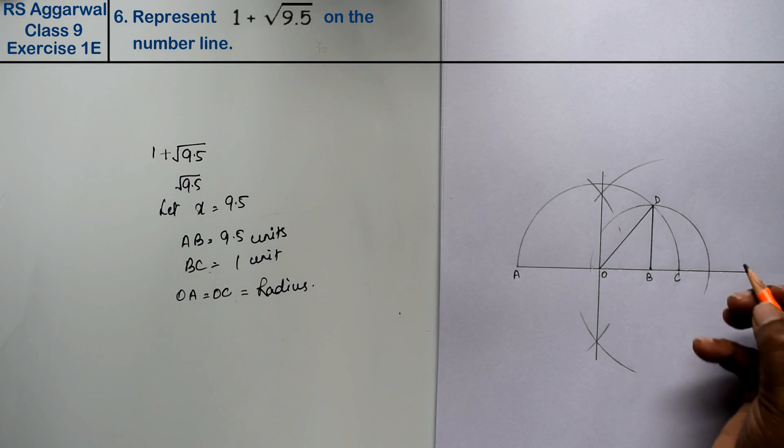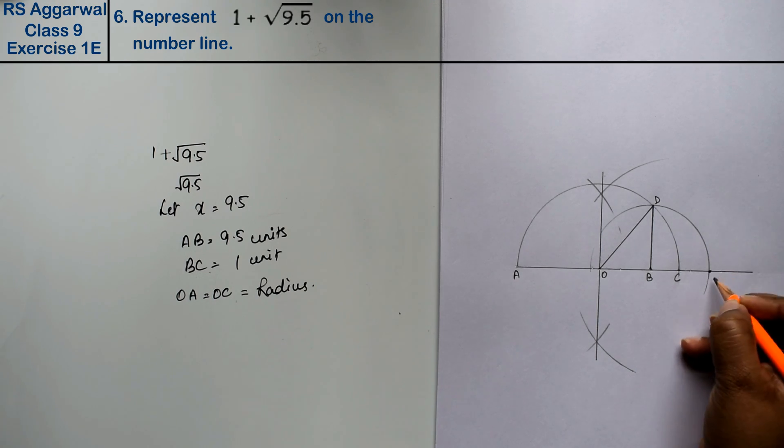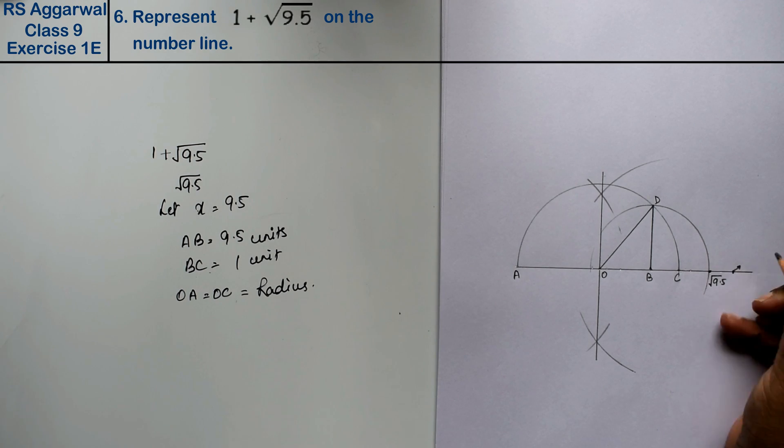This point is root 9.5, this point is known as D point, sorry E point. E point is 1 plus root 9.5. This is the answer.